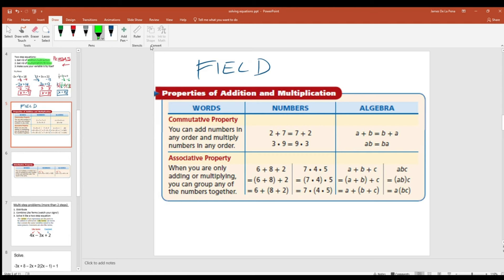So what that means is, if I have a statement like two plus seven, I can rewrite that as seven plus two and it means the same thing. Okay, it's the same thing for multiplication. I can do three times nine or I can do nine times three. That's what's called the commutative property.